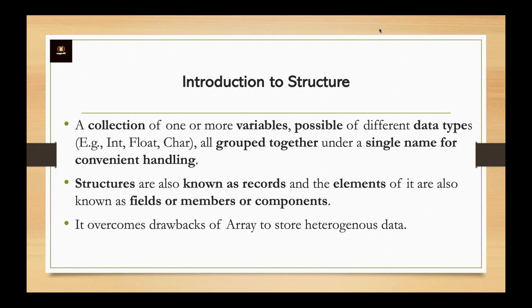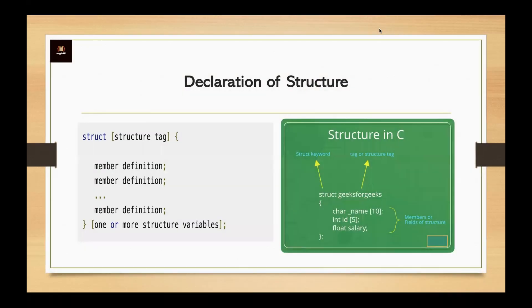In a structure, the eligible members are present. Members are also referred to as fields, applications, or components. Each member within the structure has a unique type and name.